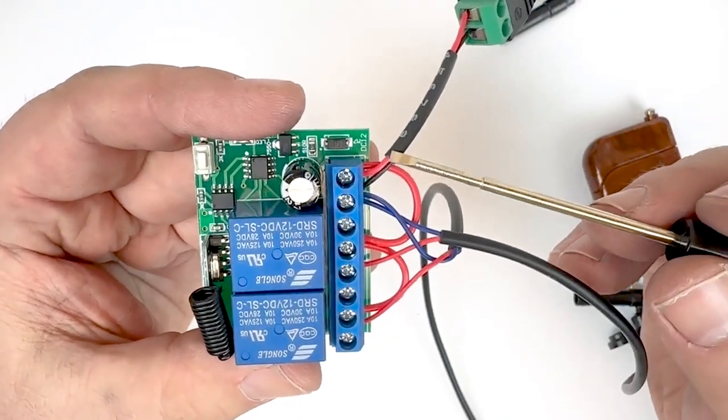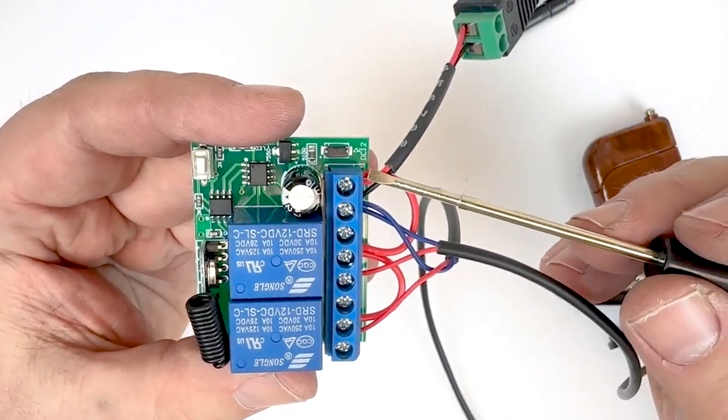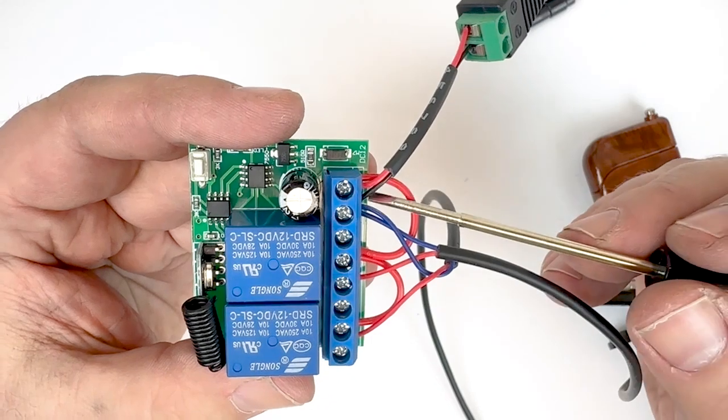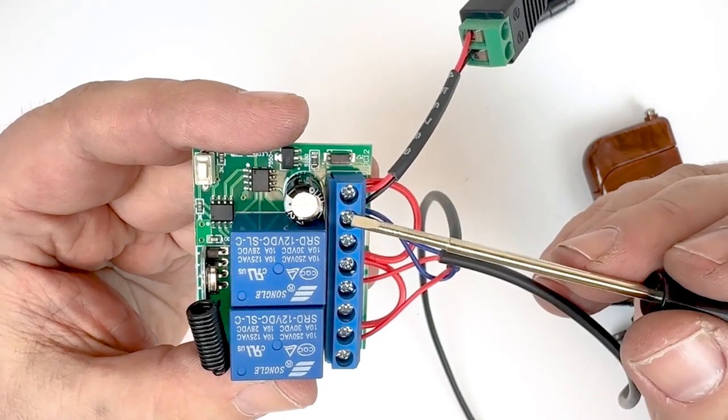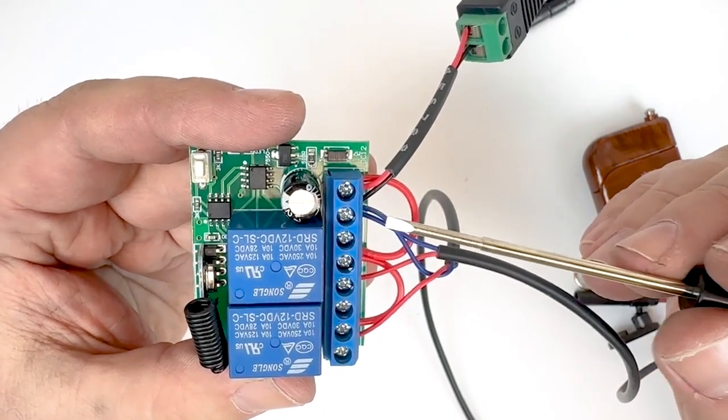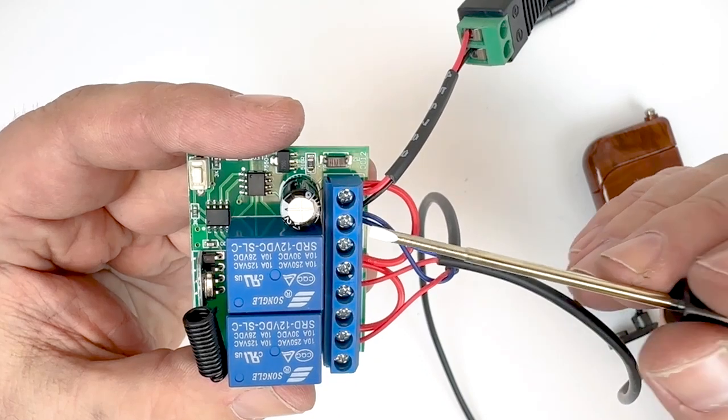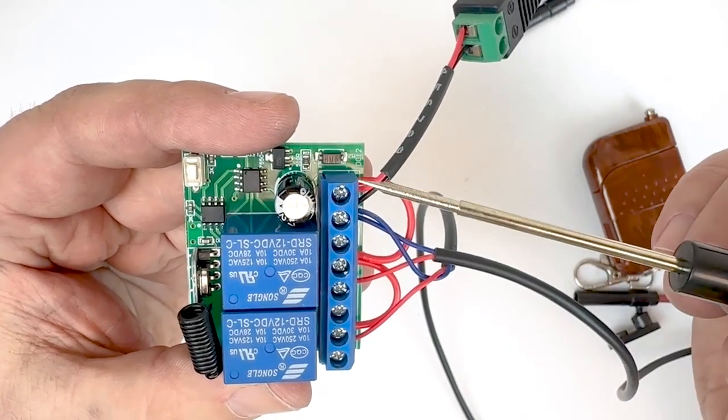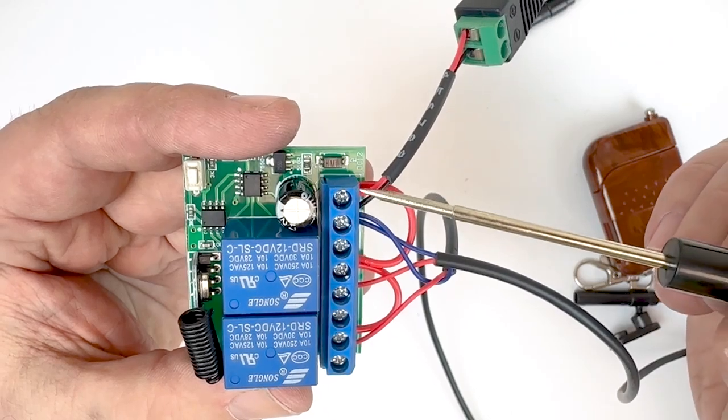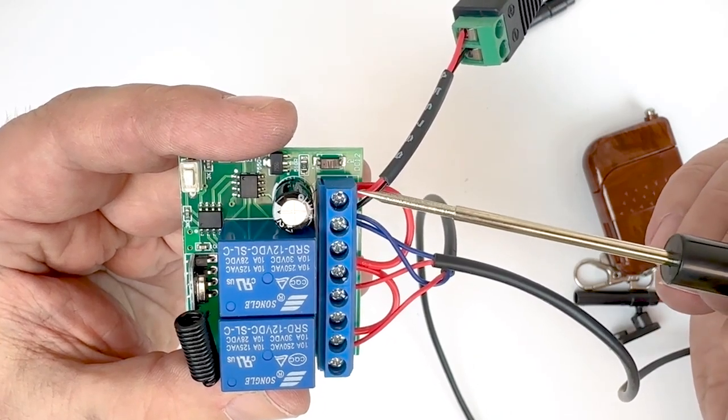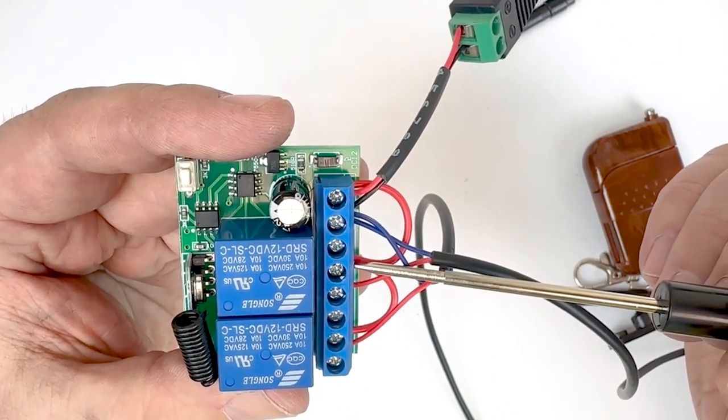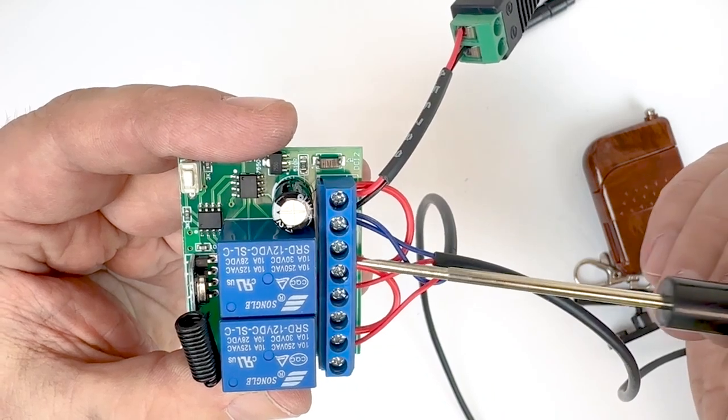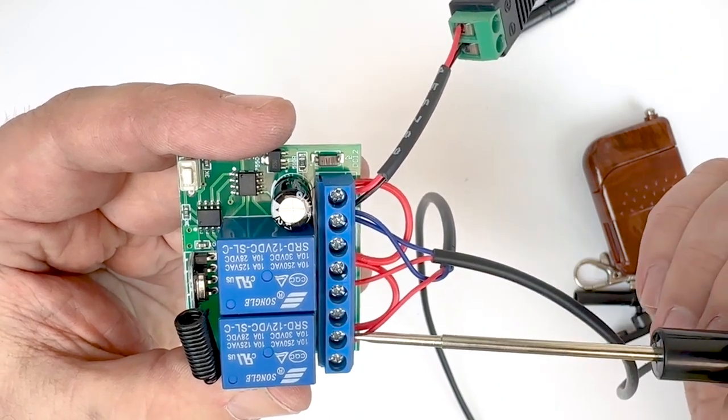So you can see here that we have our 12 volt power coming in. I've got my positive going here to the positive terminal, my negative, the black wire here, going to ground. I also have the two negative leads from our 12 volt lights going to the negative ground terminal as well. I've then taken a piece of wire here and I'm jumping the positive power, 12 volt power, from plus over to C, this is C2, and then over to C1 as well. Then I have the positive leads of our 12 volt lights going to NO2 and NO1.